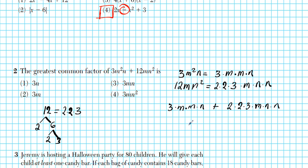The greatest common factor is the greatest term that is common to these two terms. We know that 3 and 3 are common, so we can factor that out. We have one m here and one m there that's common. We have another m here but we do not have another m there, so it's only one m that's common to both sides. And we also have one n common to both.